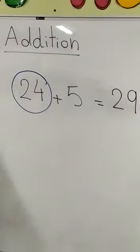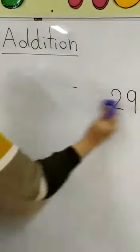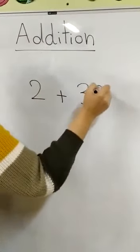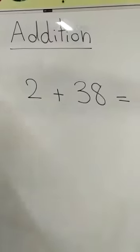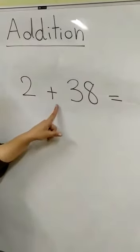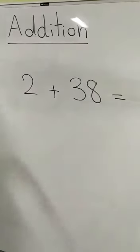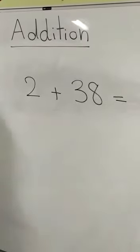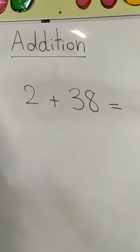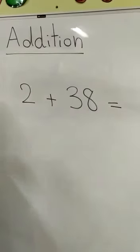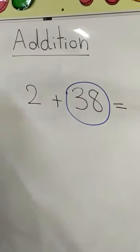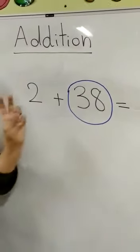Super class, let's take the last equation we have today. Let's read: 2 plus 38 equals. What sign is it? Plus! And plus means more. Circle the bigger number — where's the bigger number? 38! Super. I put the 38 in my mind, and I put the smaller number on my fingers. All of you, put two on your fingers.